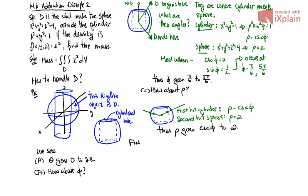So finally, we can say the mass is the triple integral over D of z squared dV. Outside integral is theta, zero to 2 pi. Next integral is phi, pi over 6 to 5 pi over 6. Next one, rho, cosecant phi, the cylinder, to 2, the sphere.